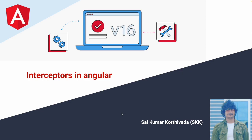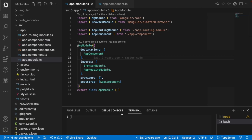Let us understand about the interceptor. As we know about HTTP calls, which we discussed in previous videos — for those HTTP calls, whenever you want to interrupt or intercept some set of requests or responses, you can use interceptors. Whenever you hit an API, in general it will go directly to the network call, call the cloud environment, and you will get the data from the back end. That is the HTTP request — what we do and what we get from HTTP calls.